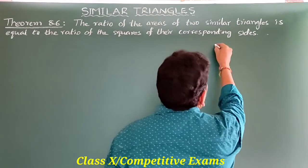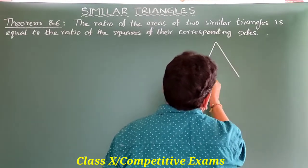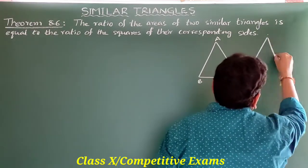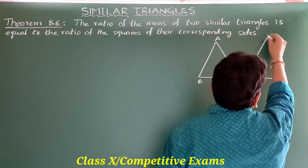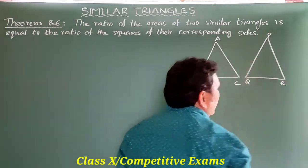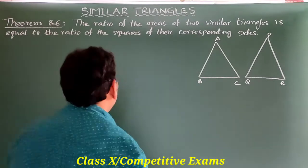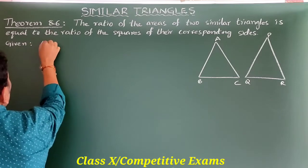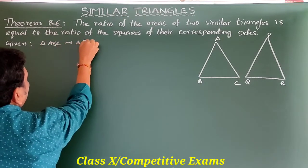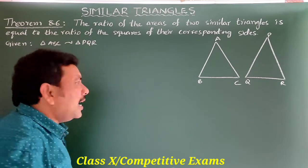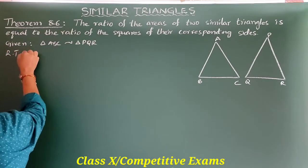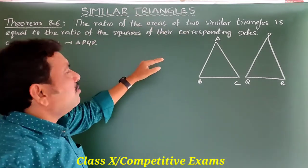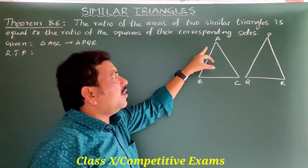First, according to the problem, draw two triangles: triangle ABC and triangle PQR. These are the two similar triangles. Let us prove. Given: triangle ABC is similar to triangle PQR. RTP — what we have to prove: the ratio of the areas of two similar triangles is equal to the ratio of squares of their corresponding sides.